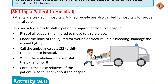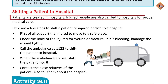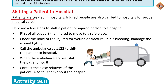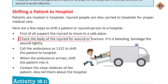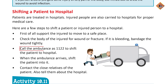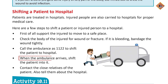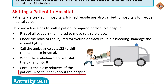Shifting a patient to hospital mein kya karte hain: agar kisi patient ko injury ho jaaye aur wo bahut zyada bimar ho jaaye, usko medical care ki zaroorat hoti hai. First of all, support the injured to move to a safe place. Uske wound ya fracture ko check karein, agar bleeding ho rahi hai to bandage kar dein, aur ambulance ko bulayein. Ambulance ka number hai 1122. Jab wo aajayegi, patient ko ambulance mein hospital shift kar dein aur uske rishtedaaron ko call karein.